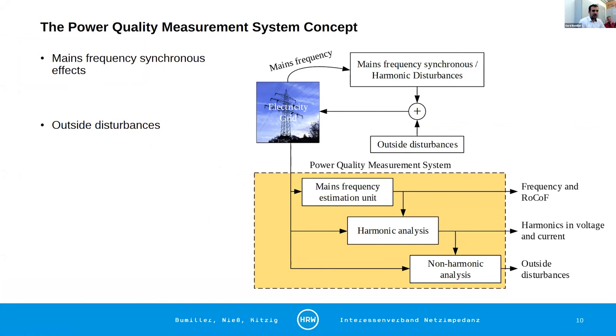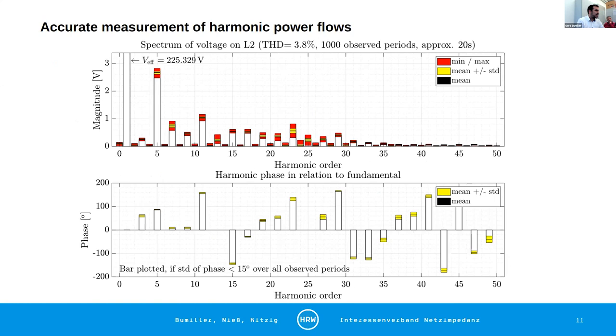We have these mains frequency synchronous effects and we have these outside disturbances, and we want to perform at first a harmonic analysis and then a non-harmonic analysis. So we want to be able to separate those two effects again that are taken into account in our model. We want to orthogonalize at first the frequency. We have a mains frequency measurement, and with this mains frequency measurement we can perform a harmonic analysis. We can extract everything that is harmonic, so synchronous with the mains frequency. Then we can take this information to subtract all the non-harmonic information that is in our grid, for example in the voltage or currents that we measure.